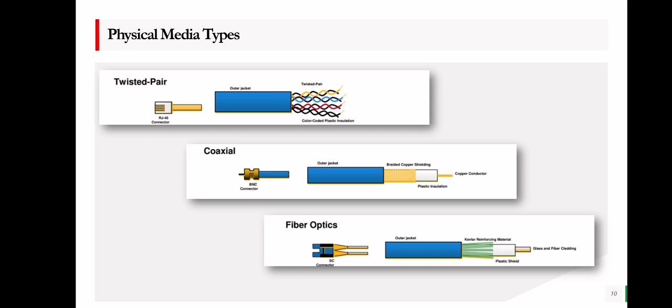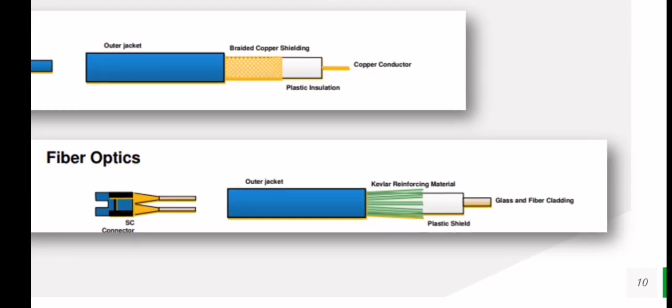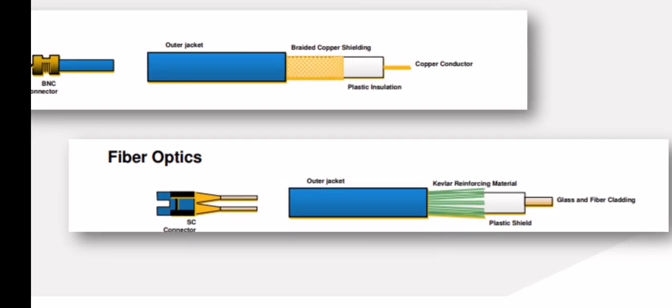There are different physical media types used when connecting networks such as LAN, WAN, or MAN. The first is the twisted pair, sometimes referred to as the UTP cable. The second is the coaxial cable, like the one used for televisions — it is also used for connecting networks. Number three is fiber optics, which is one of the newest technologies in terms of physical media.